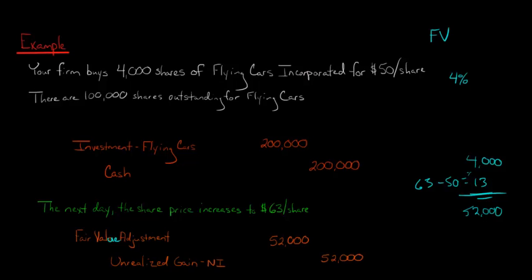On the balance sheet, we're going to have this investment. We're going to have that $200,000. And then let's just pretend that right now at the end of this day that we put together our balance sheet, because remember, it's a snapshot of a point in time. Then we would add in the $52,000 fair value adjustment. And so it would be $252,000.